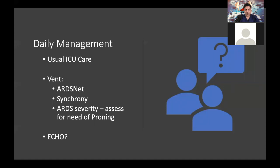Once we admit the patient, especially in the ICU, we continue with usual ICU care. Most treatment is supportive. You must manage it as regular ARDS: follow the ARDS NET protocol, ensure good patient-ventilator synchrony, assess ARDS severity, and assess daily for the need for proning. There are reports of patients going into severe cardiogenic shock due to myocarditis, even after improvement of ARDS. Reports from Seattle and China suggest this as well, so if a patient has sudden hemodynamic deterioration, consider ordering an echo.